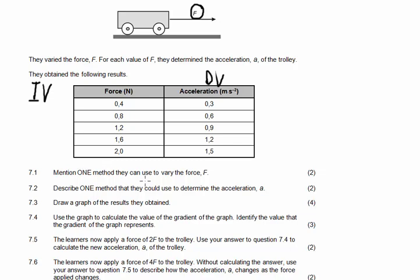I mentioned one method they can use to vary the force F - you can add more mass pieces. Sometimes they do this experiment where instead of using mass pieces, they use elastics. So you can add more elastics to create a larger force. Describe one method that they could use to determine the acceleration a. You can analyze a ticket timer tape by attaching it, or measuring the time it takes and the distance covered, and therefore you can calculate acceleration using that.